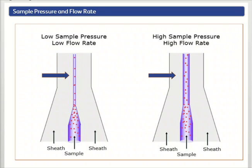With a wider sample core, some cells could pass through the laser beam off-center and intercept the laser beam at a less than optimal excitation intensity. Thus, higher sample pressure can decrease data resolution.